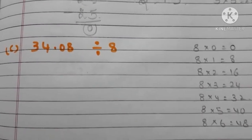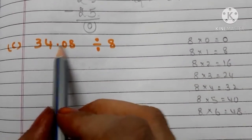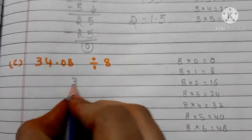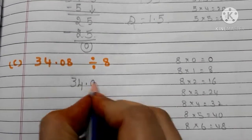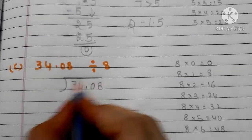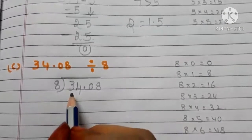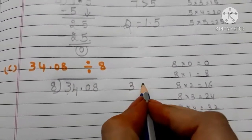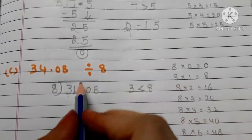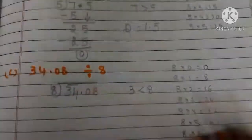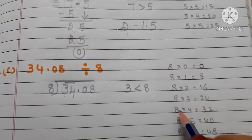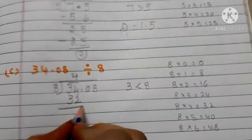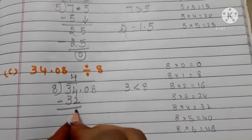Let us go to another example. Here we have 34.08 divided by 8. First, we have to arrange like this: 34.08 divided by 8. In the dividend 34.08, the first digit is 3, and 3 is less than the divisor 8. So we have to take 34. Eight 4s are 32. 34 minus 32 is 2.